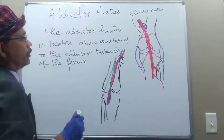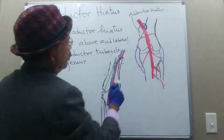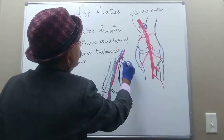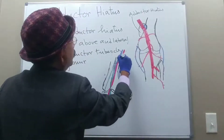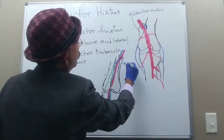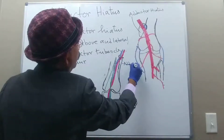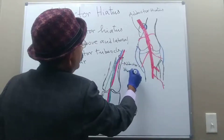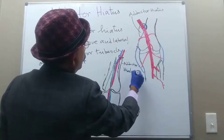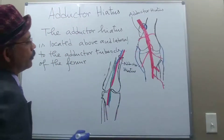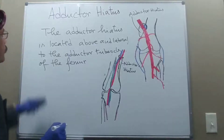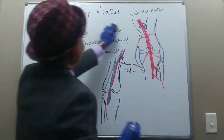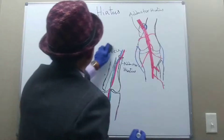Here is the adductor hiatus — this gap is the adductor hiatus. Now let's find out the contents of the adductor hiatus.